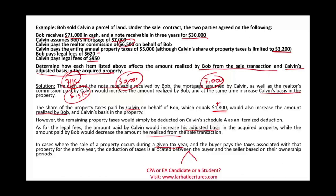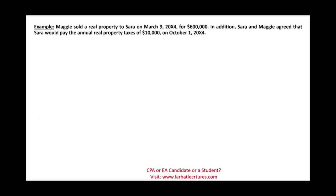In cases where the sale of property occurs during a given tax year and the buyer pays the taxes associated with that property for the entire year, the deduction of taxes is allocated between the buyer and the seller based on the ownership period. For example, Maggie sold a property to Sarah on March 9th, 20X4, for $600,000. Sarah and Maggie agreed that Sarah would pay the annual real property taxes of $10,000.